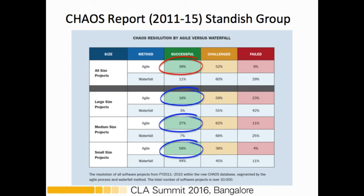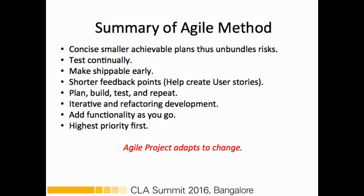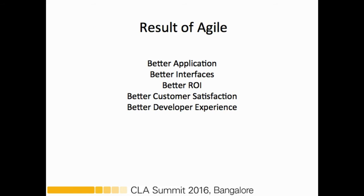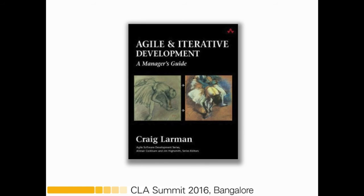To summarize the agile method: we divide the project into concisely smaller, achievable plans, which unbundles risk, and we test continuously. Agile is an iterative method — we add functionality as we go and always put the highest priority items first. This helps the agile project adapt to any change that may occur. The result of agile is a better application, better interfaces, better return on investment, and happy customers and developers, because we focus mostly on the user story. If you want to learn more, the book I recommend is 'Agile and Iterative Development: A Manager's Guide' by Craig Lerman.